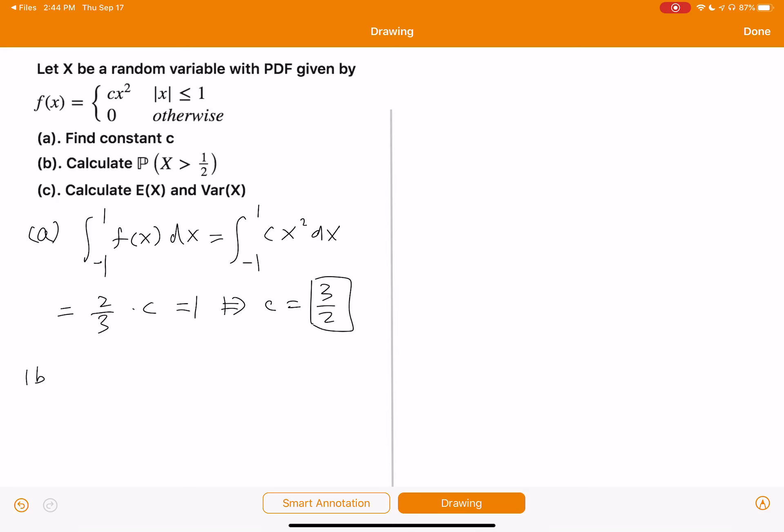So let's look at b. The probability of X is greater than one-half. This is equal to the integral from one-half to one. Because x is between negative one and positive one, so the integral must be from one-half to one.